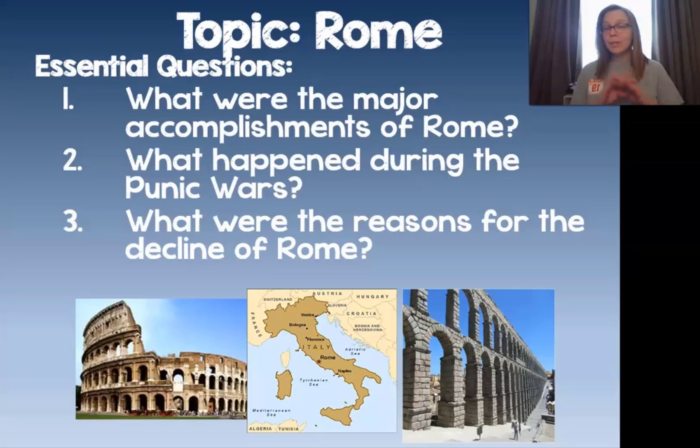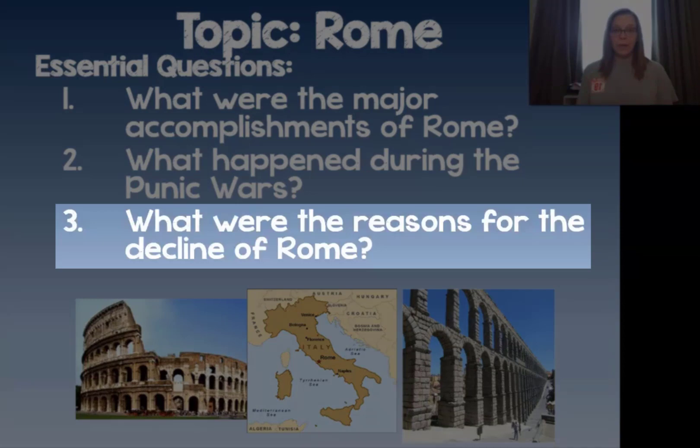Here are our essential questions for this set of notes. First, listen for what were the major accomplishments of Rome. Next, you're going to be looking for what happened during the Punic Wars. And finally, you're going to be listening and looking for the reasons that Rome as an empire fell — in other words, what were the reasons for the decline of Rome.